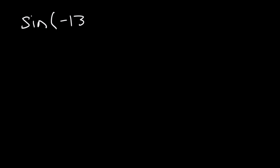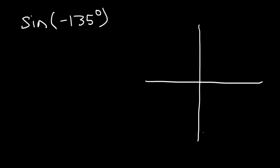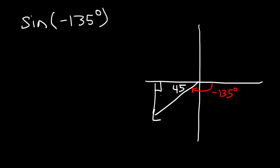Try this one: find the value of sine of negative 135 degrees. Negative 135 is located in quadrant 3. The negative x-axis is negative 180 degrees, so the reference angle is 180 minus 135, which is 45 degrees. So what we have is a 45-45-90 triangle, where across from the 45 angles is 1 and across from the 90 is √2.